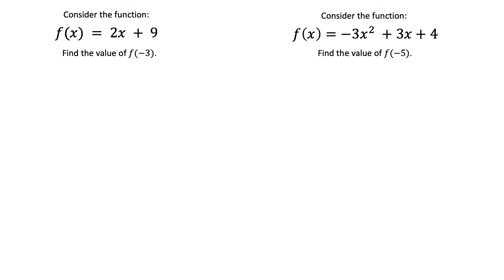The first example is f(x) equals 2x plus 9, and we are instructed to find the value of f(-3). And all this means is we're going to substitute -3 for x in the expression 2x plus 9.